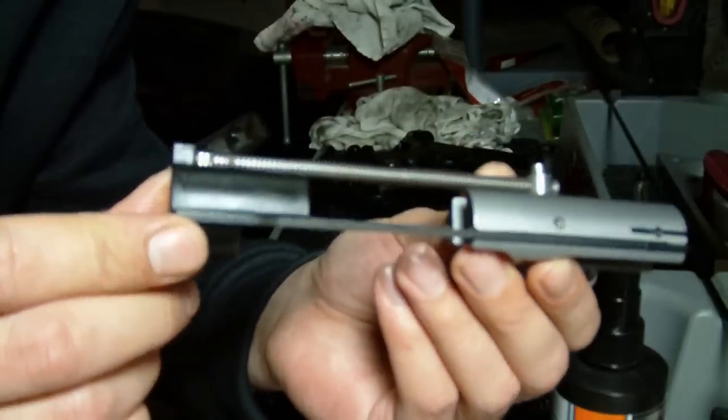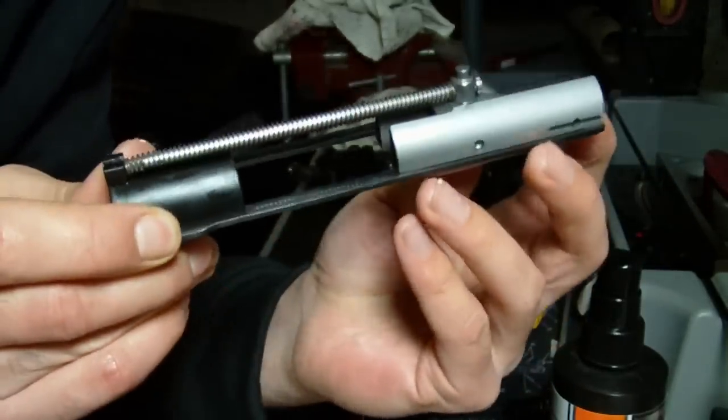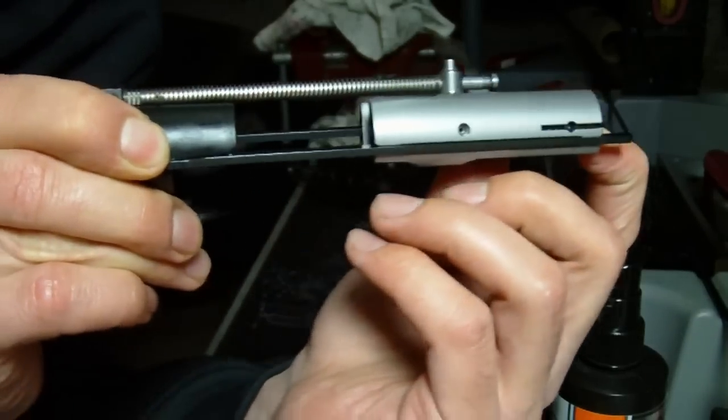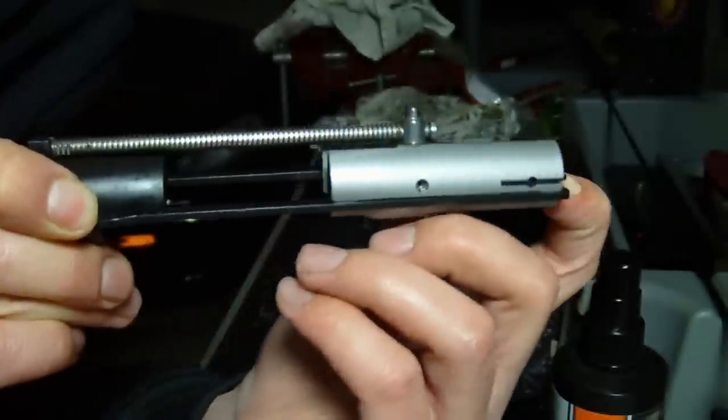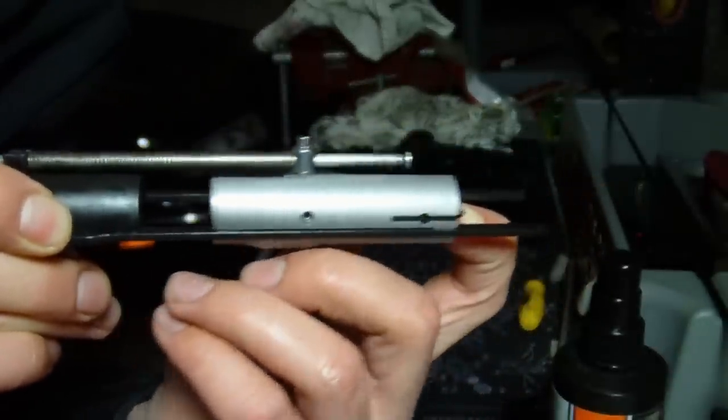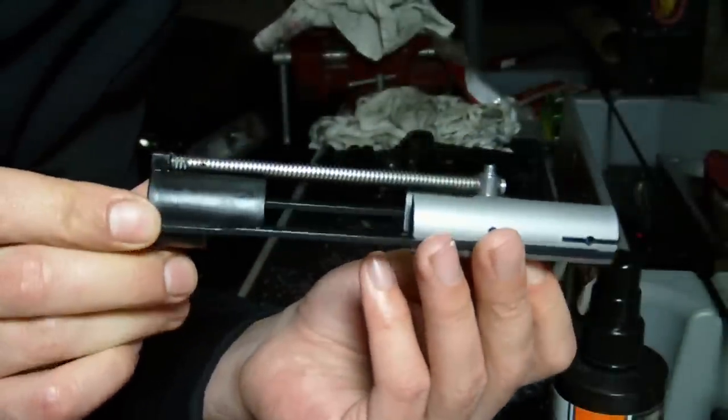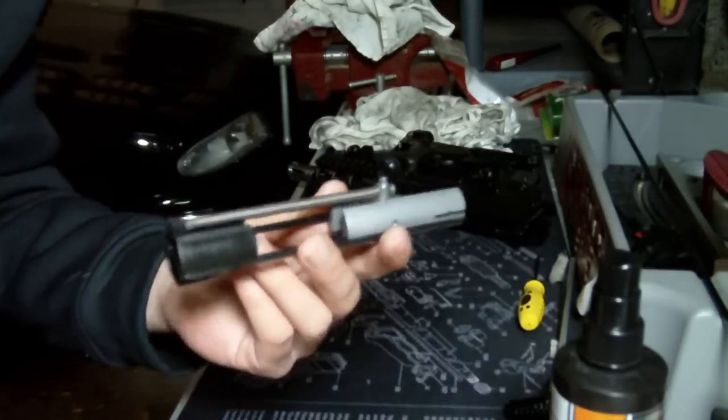So then once you get it back together, what you have is the bolt that should ride on that bolt carrier fairly easily. If you hear a bunch of grime in there, you got a problem. You got to go back and clean those slide rails pretty good, but otherwise everything should be good there.